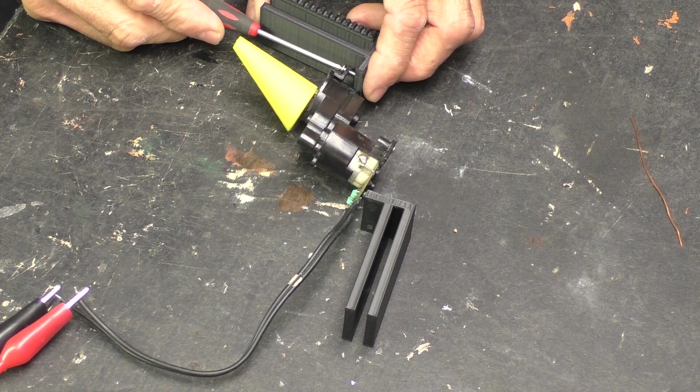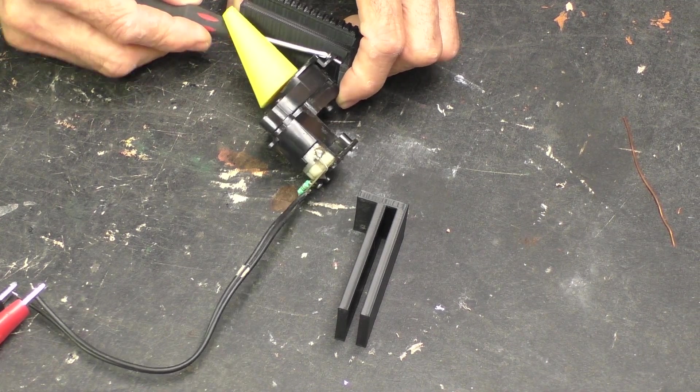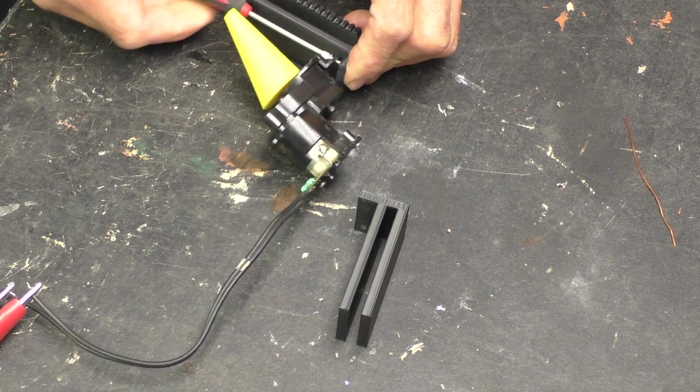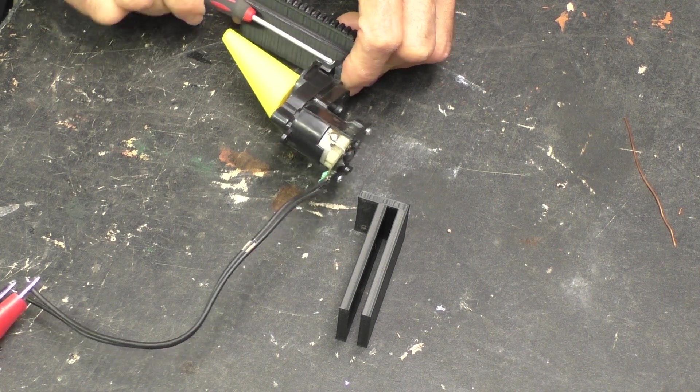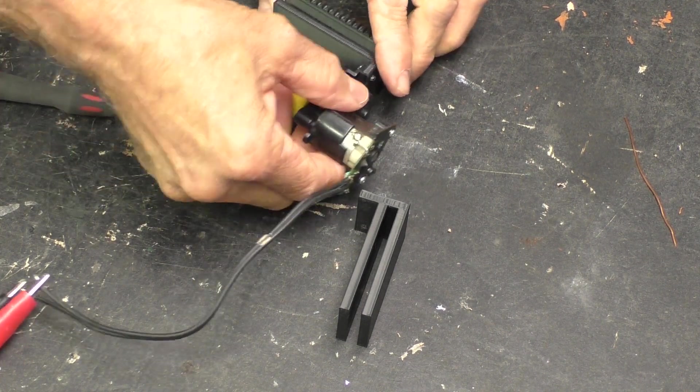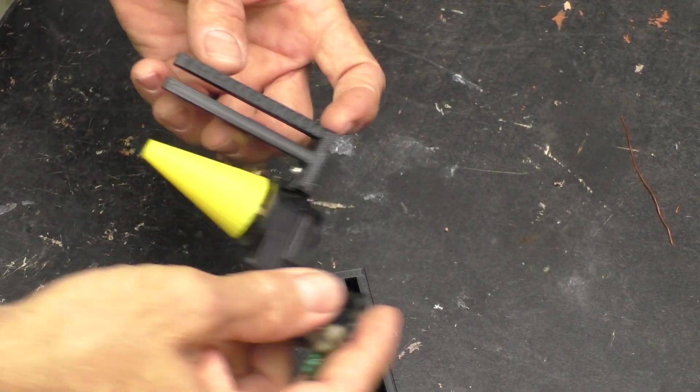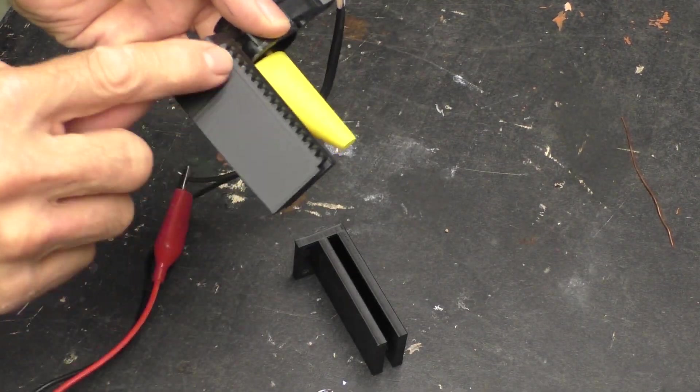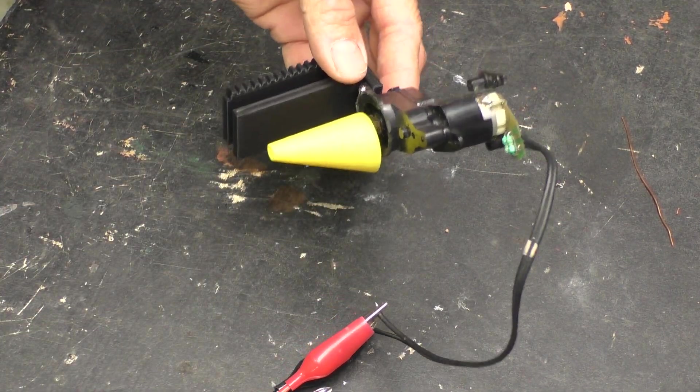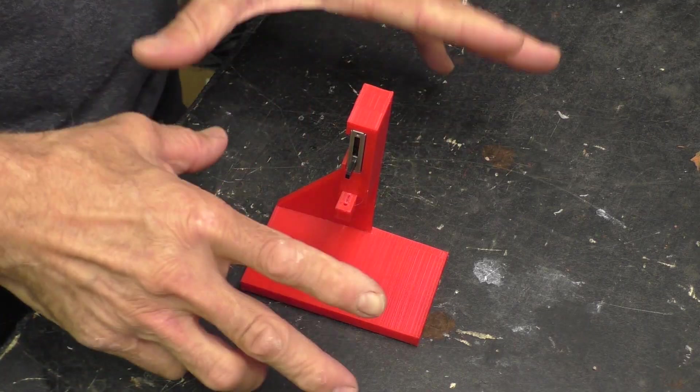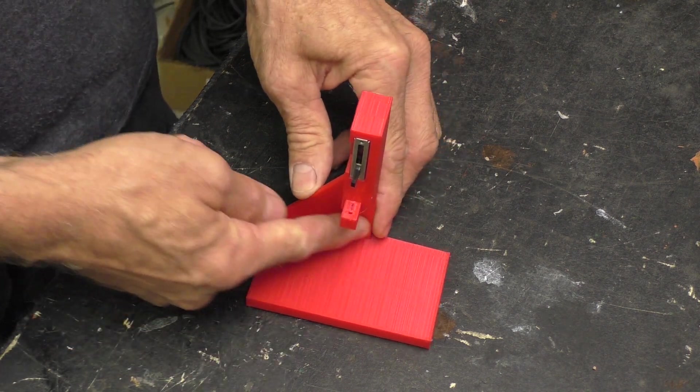So now I can mount the motor to the motor mount like so. And there it is all mounted up with the sector gear right here. Now we can put it onto the potentiometer stand.